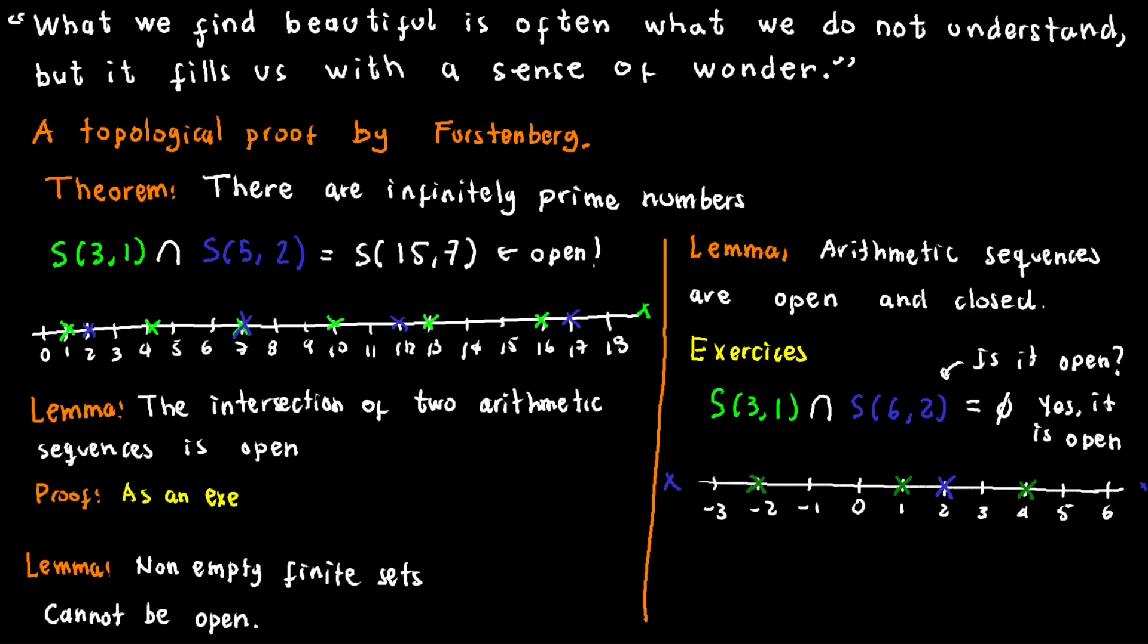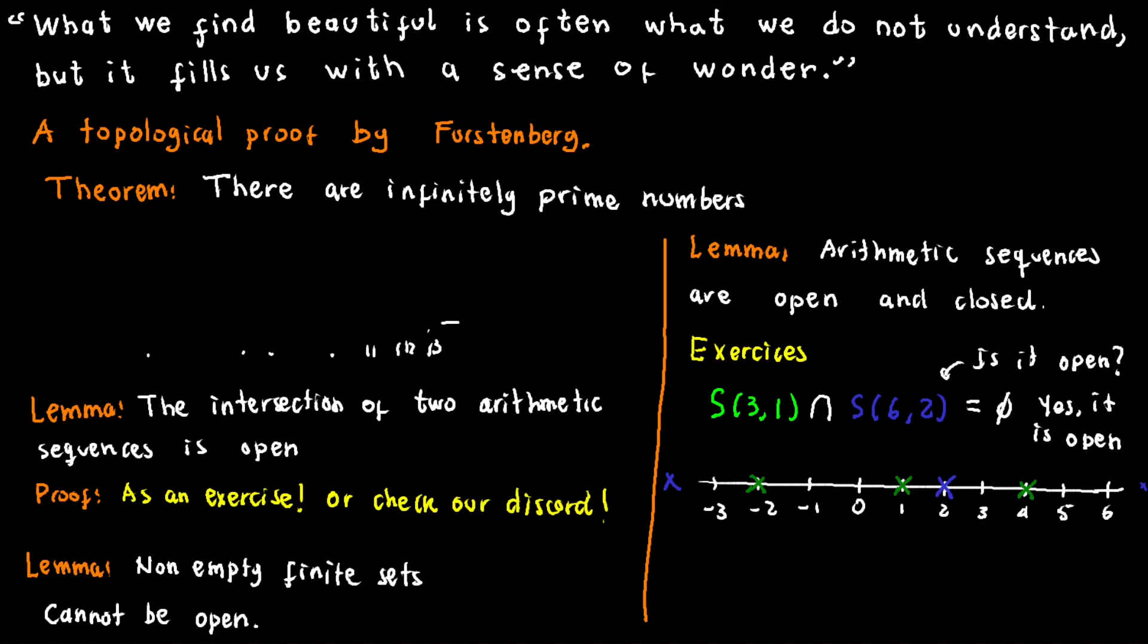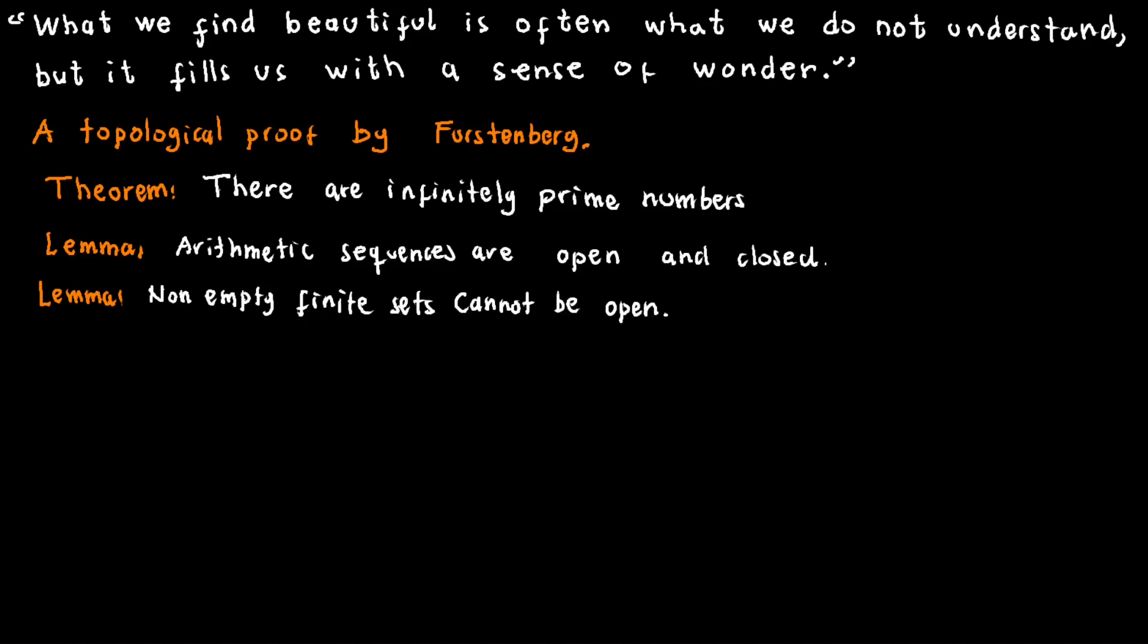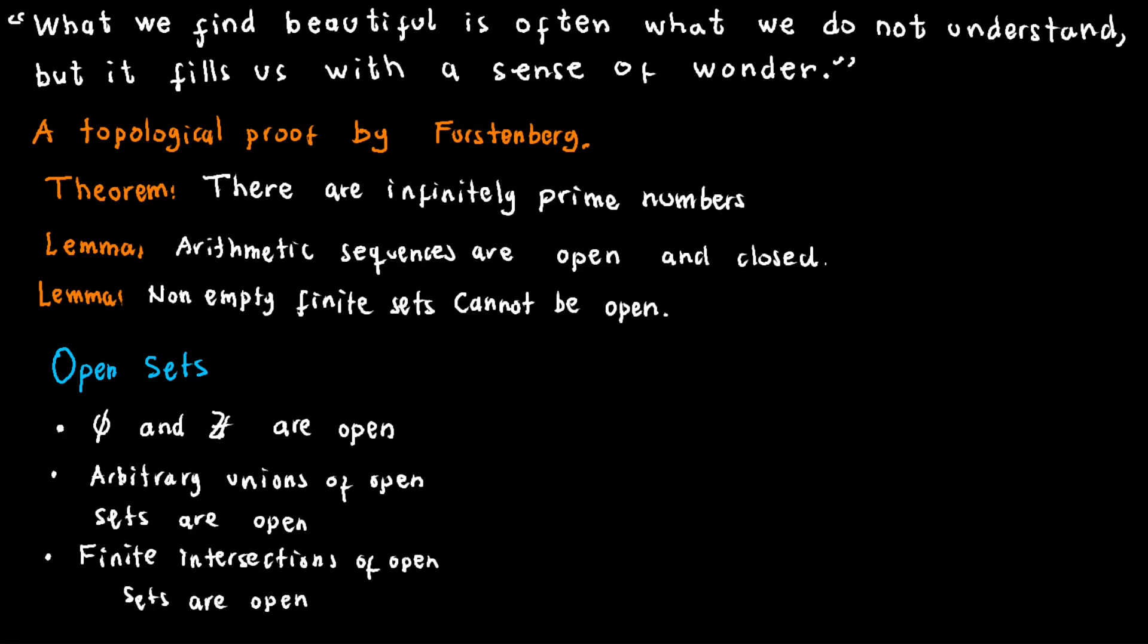We assert the truth of the statement, but leave it as an exercise for the viewer. Share your approach to proving this result in the comments section or on Discord. With these principles in mind, let's distill three key properties of open sets. First, both the empty set and the entire set of integers qualify as open. Second, the union of any collection of open sets is also an open set. Third, the intersection of a finite number of open sets remains open.